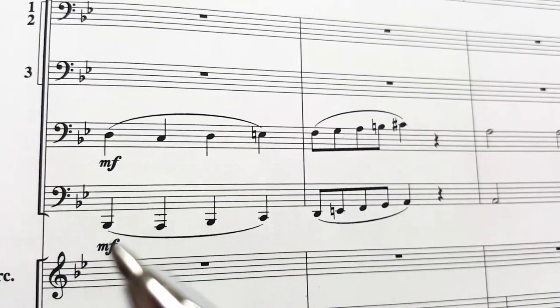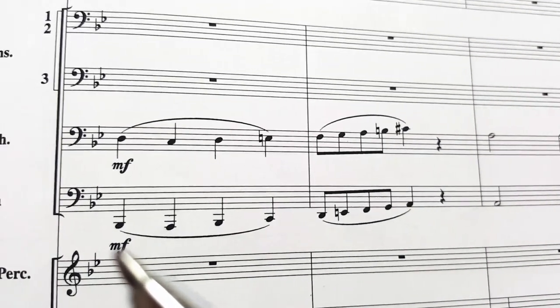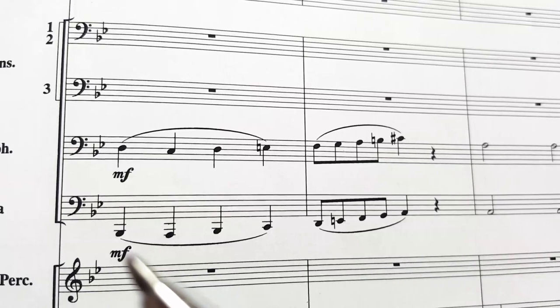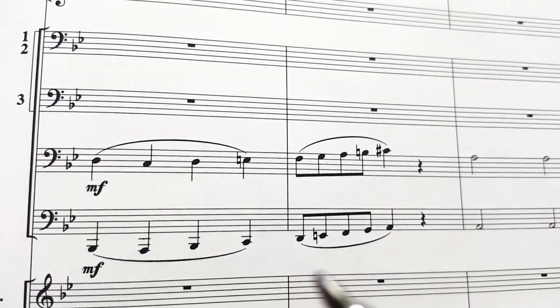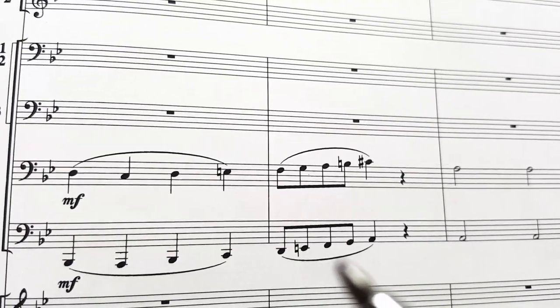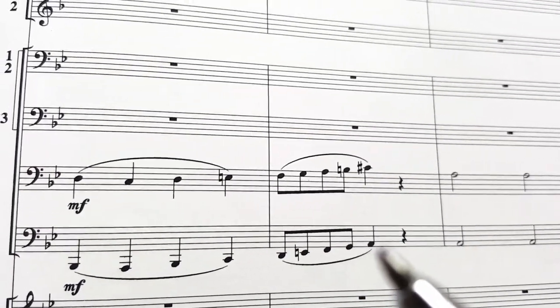This is an example from the same score. This is a tuba part, and you notice that the tuba uses ledger lines below the staff. Then the melodic contour has the melody going back onto the staff.